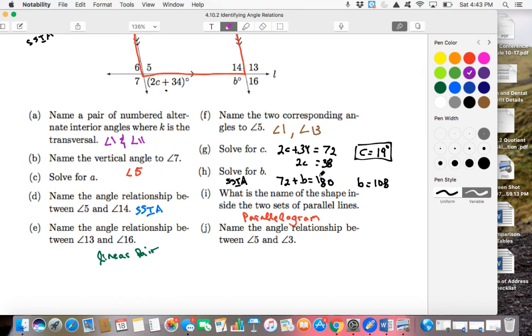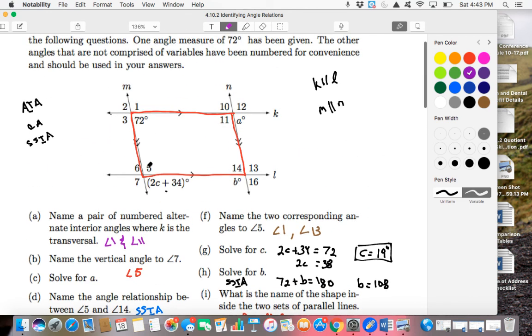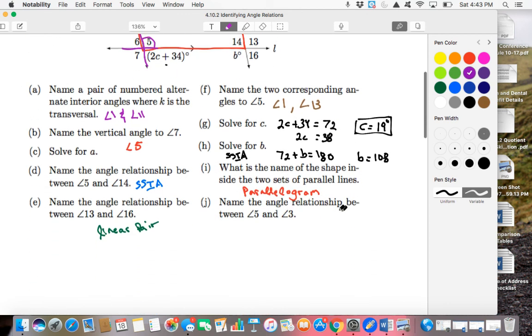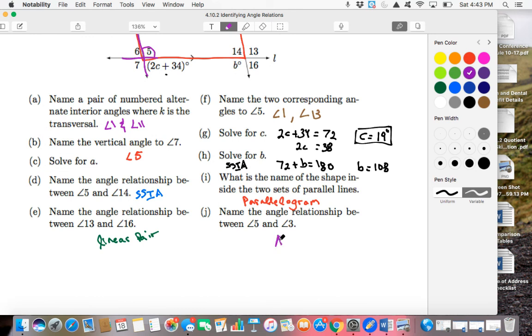Okay, finally, last but not least, name the angle relationship between 5 and 3. Here's 5, here's 3. We're talking about them sharing this transversal M, and the two parallel lines are K and L. And sure enough, they're on alternate sides of the transversal M on the interior of K and L. So that angle relationship is alternate interior angles.